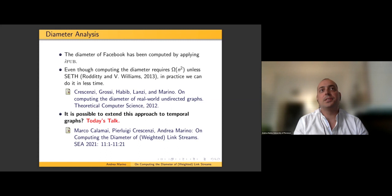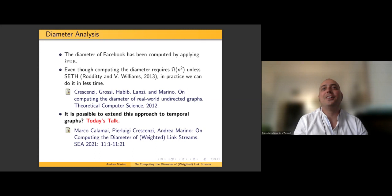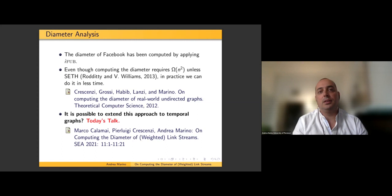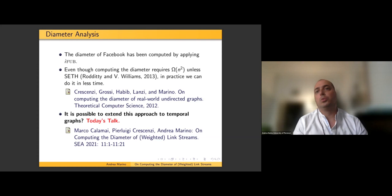The diameter is the maximum among all pairwise distances. The diameter of Facebook was computed by the iFUB algorithm, which computes the diameter of big networks. We know that computing the diameter requires quadratic time unless the Strong Exponential Time Hypothesis (SETH) is false. The question that came out last year was: is it possible to extend this algorithm to compute the diameter of static graphs also to temporal graphs?